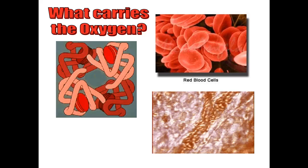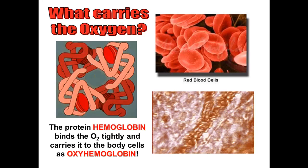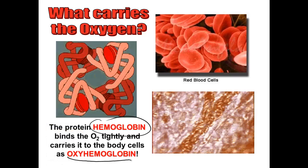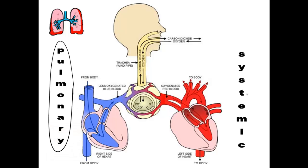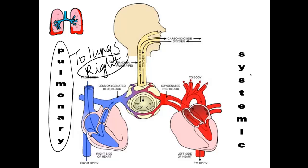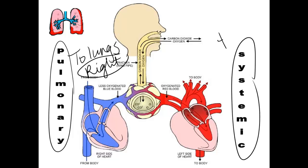So what actually carries the oxygen? Hemoglobin. When the protein hemoglobin carries oxygen, we call it oxyhemoglobin — the symbol is HbO2. So there are two different systems to know: the pulmonary system carries deoxygenated blue blood to the lungs, and it's the right side of the heart that controls the pulmonary system. The systemic system carries oxygenated blood to the body, and it's the left side of the heart that controls the systemic system.